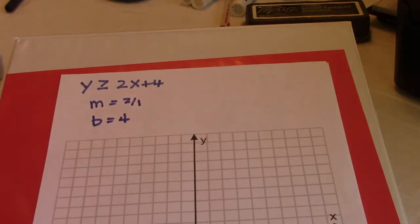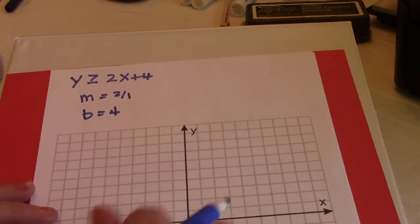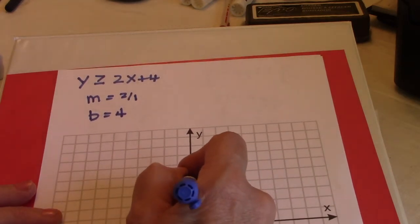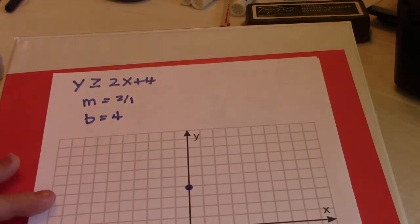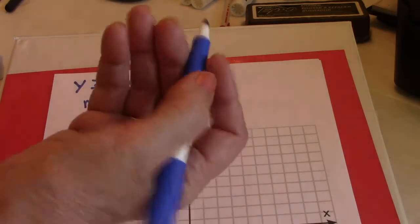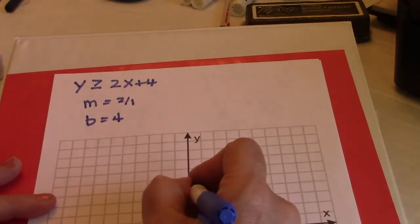So let's graph it as though it's the slope intercept form. M is 2 over 1 and B equals 4, or that's the y-intercept, or where it crosses the y-axis. So let's go up 1, 2, 3, 4 for my B which is my y-intercept.